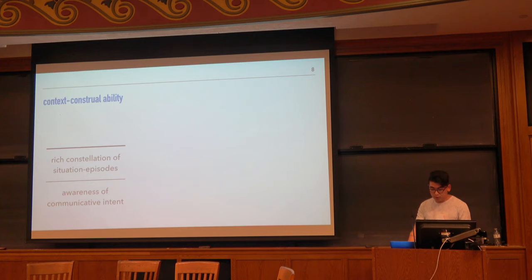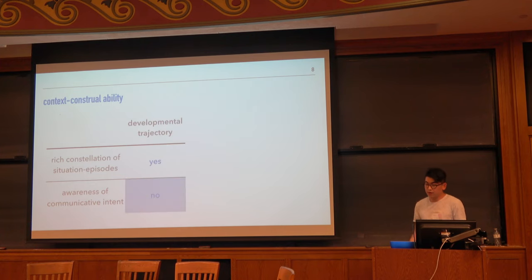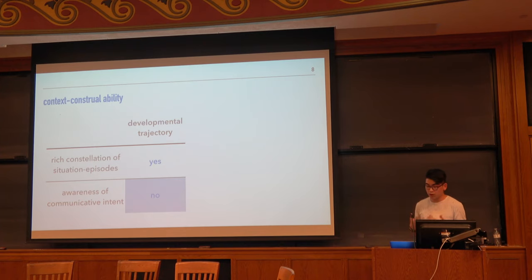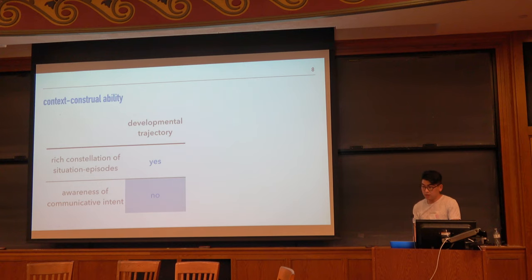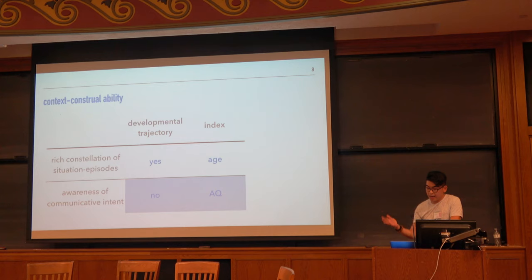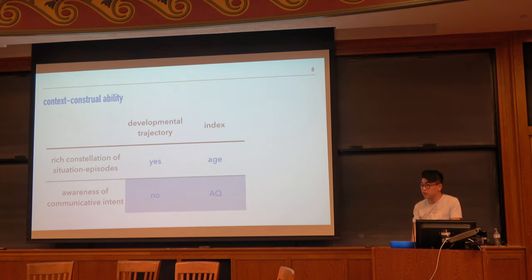We have our first two components of context-construal. While the first is clearly going to be subject to maturational constraints — you need to have lots of experiences to grow your bank of situation episodes — we take context-sensitivity to be generally age-independent. We use age and AQ respectively to index these components.